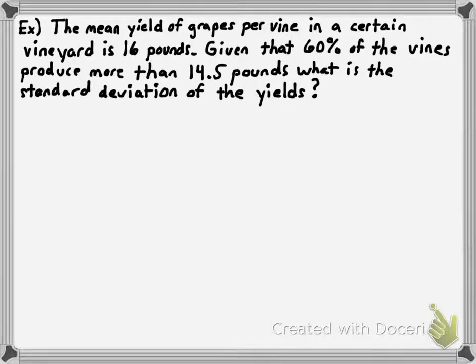Let's take a look at one. Here we're saying that the mean yield of grapes per vine in a certain vineyard is 16 pounds. Given that 60% of the vines produce more than 14.5 pounds, what is the standard deviation of the yields?